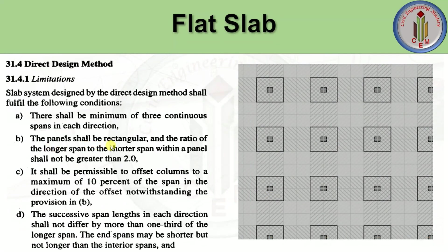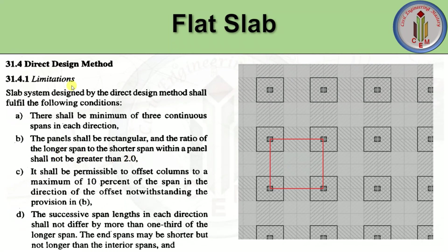The second condition is: the panel shall be rectangular, and the ratio of the longer span to the shorter span within a panel shall not be greater than 2. The panel has to be rectangular, and within that panel the longer-to-shorter span ratio shall not exceed 2.